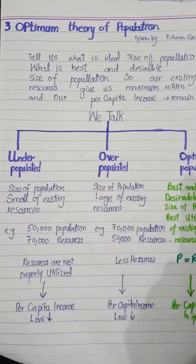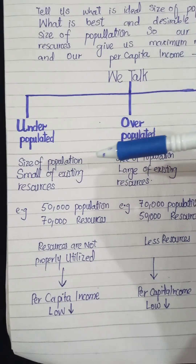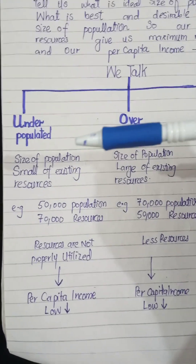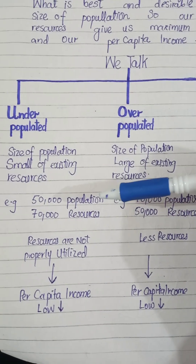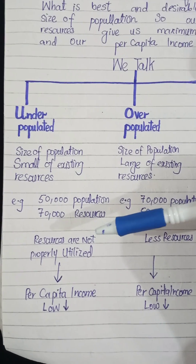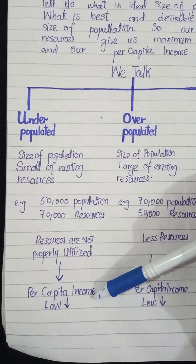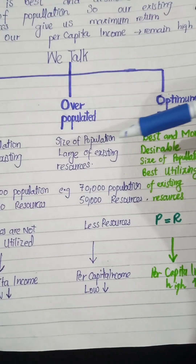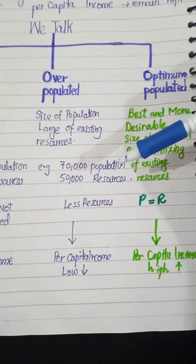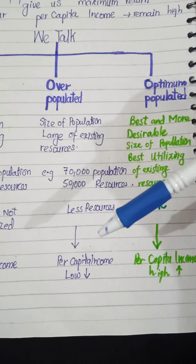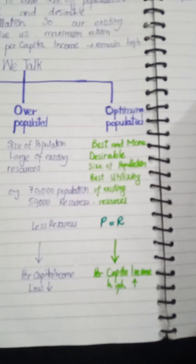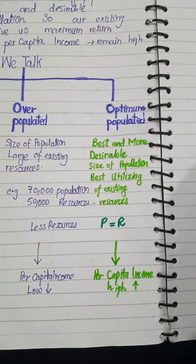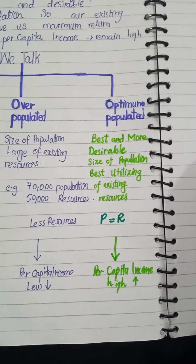Underpopulated means the size of population is small but existing resources are much more — for example, 50,000 population but 70,000 resources. The population is less but resources are not fully utilized, so per capita income will be low. Overpopulated means the size of population is large and existing resources are less — for example, 70,000 population but only 50,000 resources, so per capita income is automatically less.